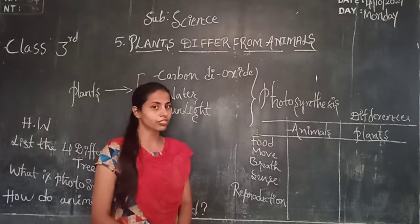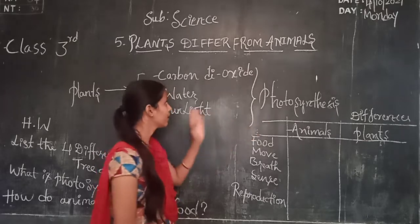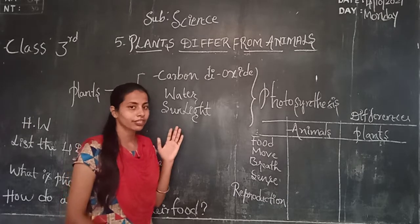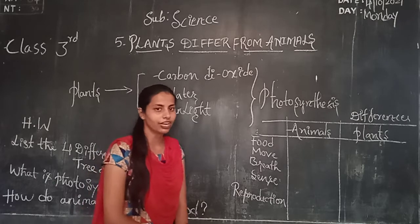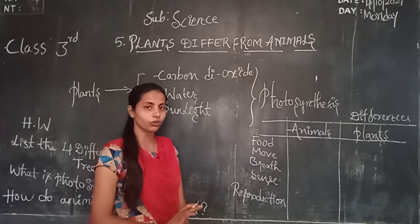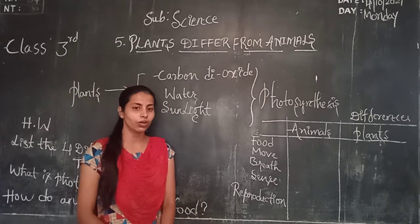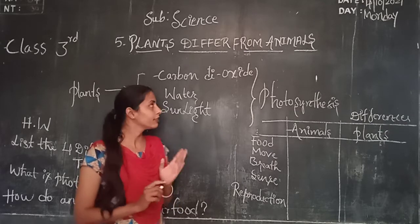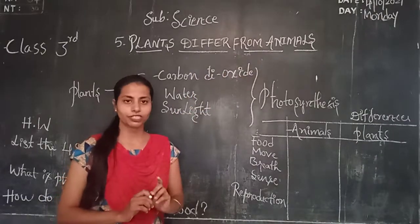In this class, we have many new words. First of all, we have photosynthesis, carbon dioxide, sunlight, and water. These are new words for you, along with the differences between plants and animals. Books open — 3rd standard Science, 5th chapter: 'The Difference Between Plants and Animals.' Chapter start.